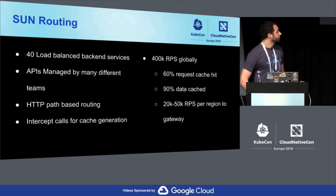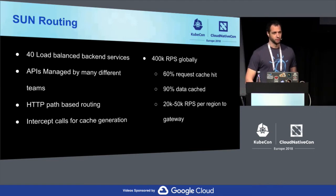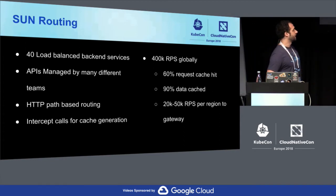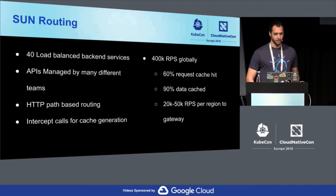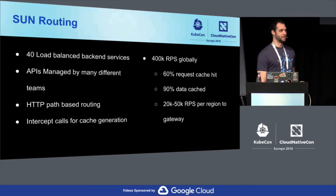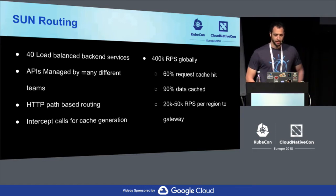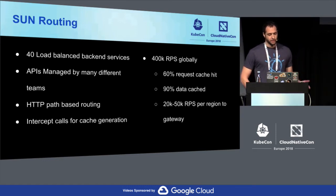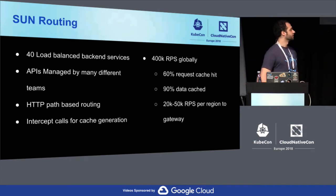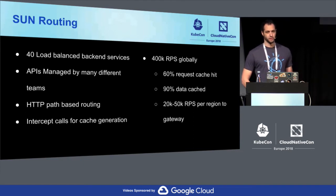We do 400,000 requests per second globally. About 60% of that is cached, and of those cached responses, about 90% of the data we serve is in that cache response. So it reduces our load significantly. That leaves about 20,000 to 50,000 requests per second per region of the four regions that we serve — a lot more manageable.